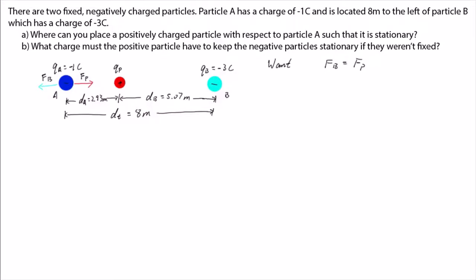The distance between particle A and the positive particle is smaller than the distance between particle A and particle B. In other words, dA is smaller than dt.